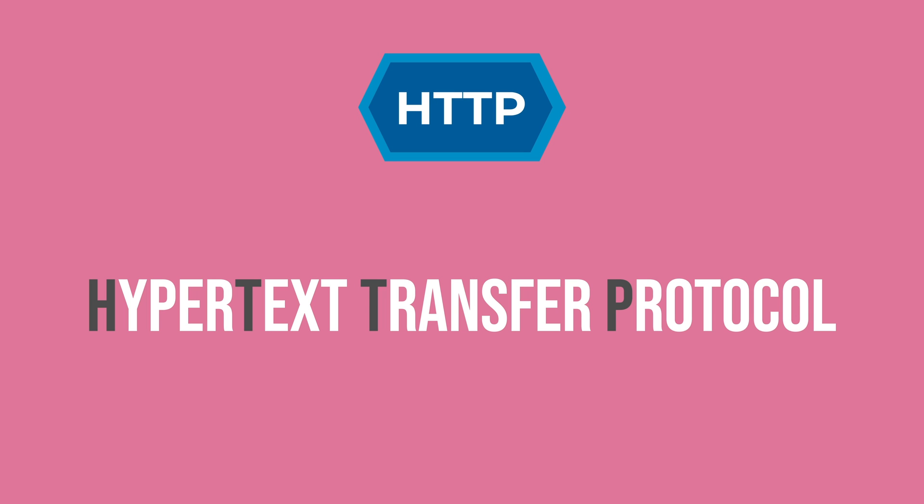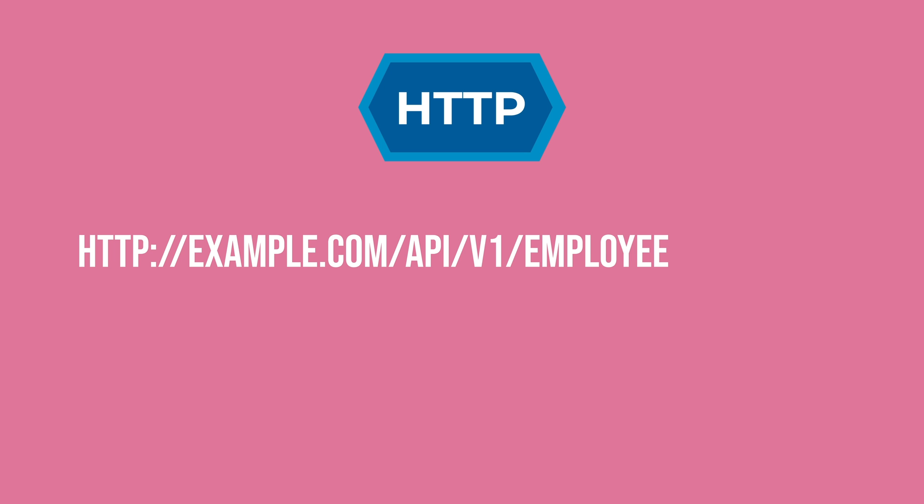Data gets passed around through the web using a protocol called HTTP, which stands for hypertext transfer protocol. To send an HTTP request you can use a tool like your Chrome browser. A request starts with the protocol, then a host so it knows where to route the request, then the path so the server knows what action to perform, and finally an optional query string — for example, if creating a new user, you'd provide the name as part of the query string.